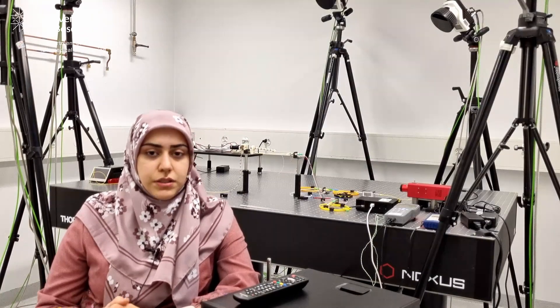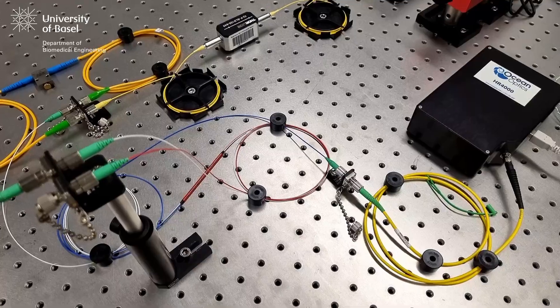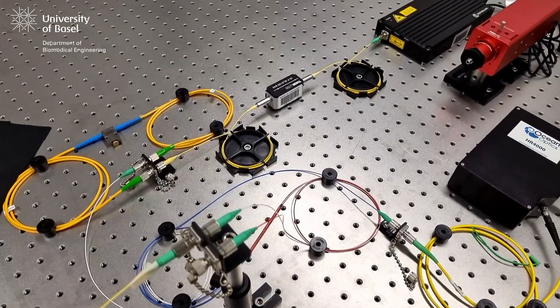Unlike conventional FBG sensors, the amplitude changes at the Bragg wavelengths are actually carrying the strain information. This allows us to use a low-cost interrogation system for monitoring the sensor's signal.